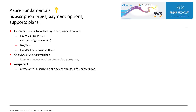First, let's have a look at subscription types. The subscription we will use is the pay-as-you-go subscription. When you first sign up with Azure, you get a free trial credit of $200 that you can spend over one month. After that, your trial credit will expire.